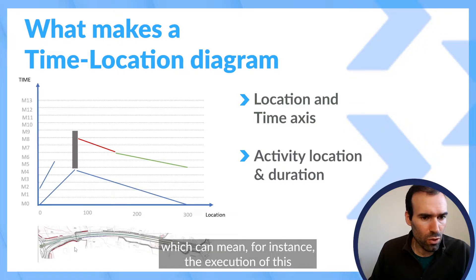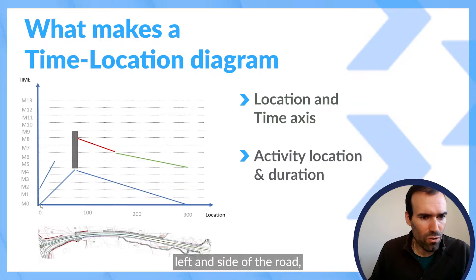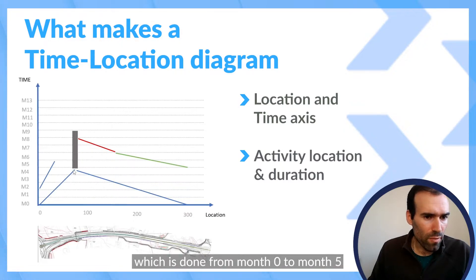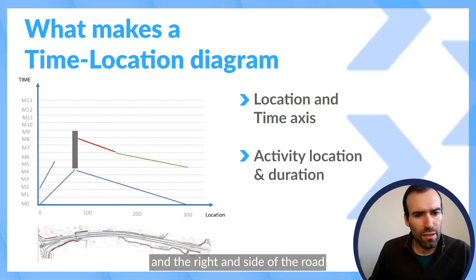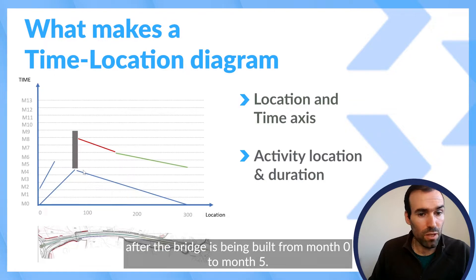which can mean for instance the execution of this left-hand side of the road, which is done from month zero to month five, and the right-hand side of the road up to the bridge is being built from month